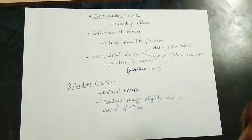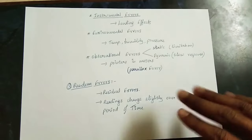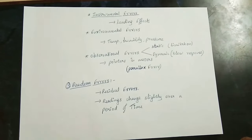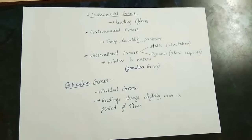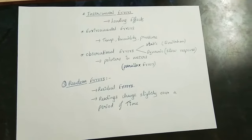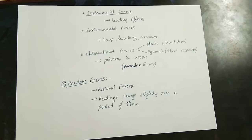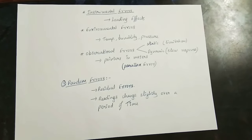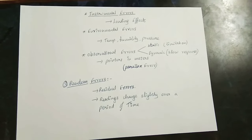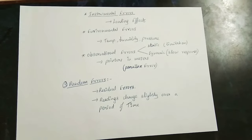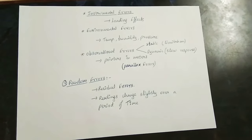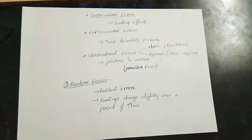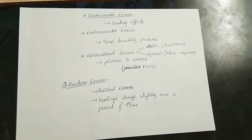There are also Static errors and Dynamic errors. Static error is a limitation of the instrument. Dynamic error is due to a slow response — when a variable quantity changes, the instrument has a slow response, which is the dynamic error.